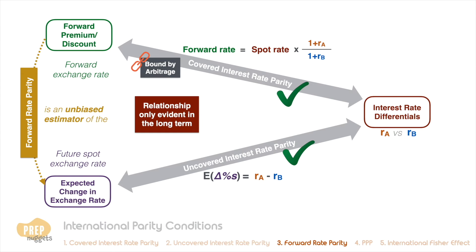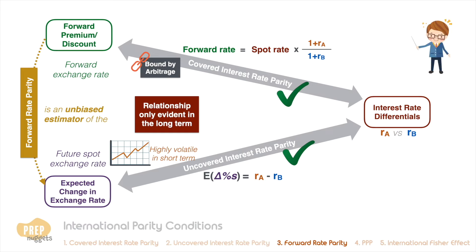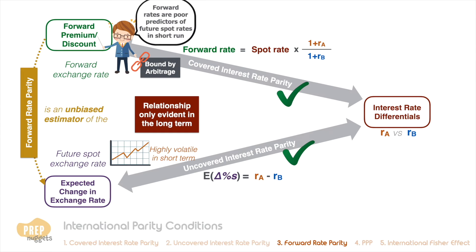Note that this relationship is only evident in the long term. Spot exchange rates are highly volatile in the short term, as there are many other factors that influence short-term exchange rate movements. As a result, forward exchange rates are typically poor predictors of future spot exchange rates in the short run. Over the longer term, uncovered interest rate parity and forward rate parity have more empirical support.